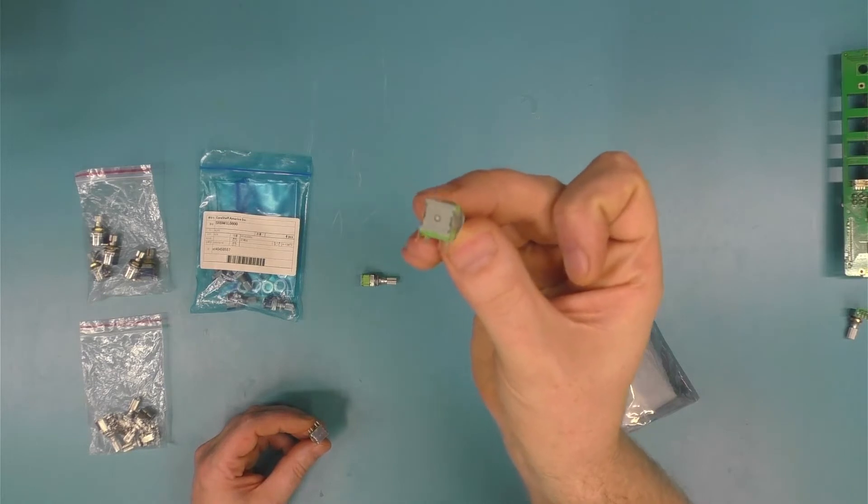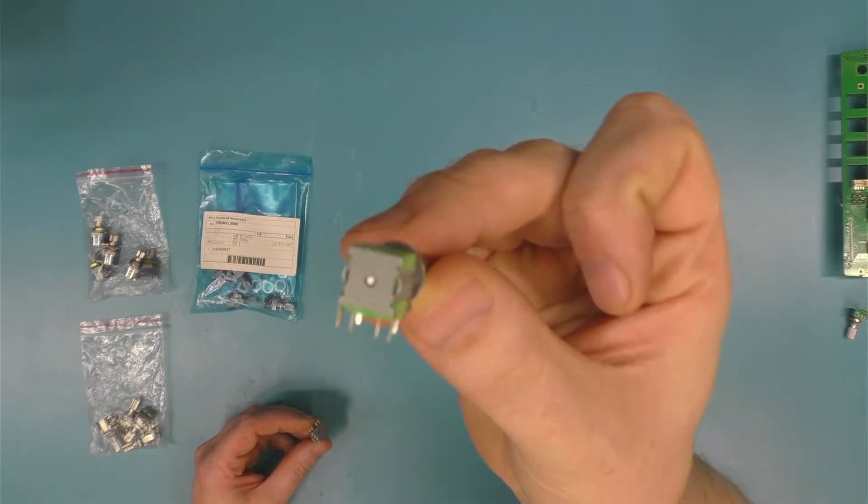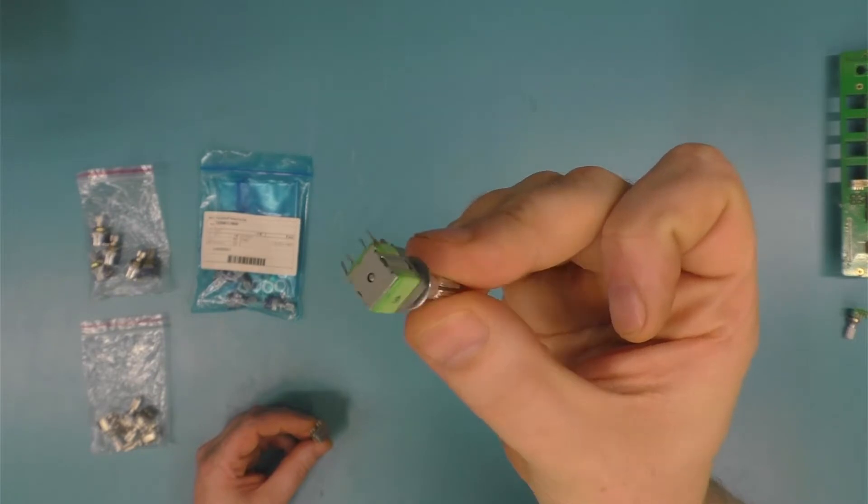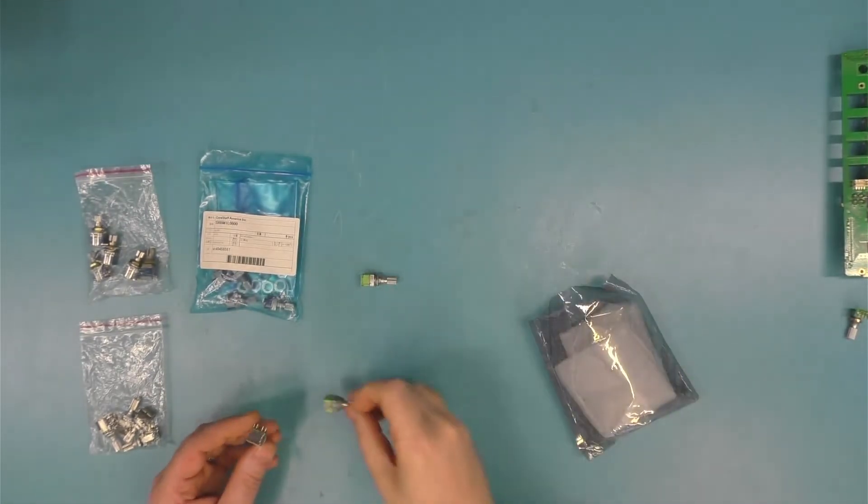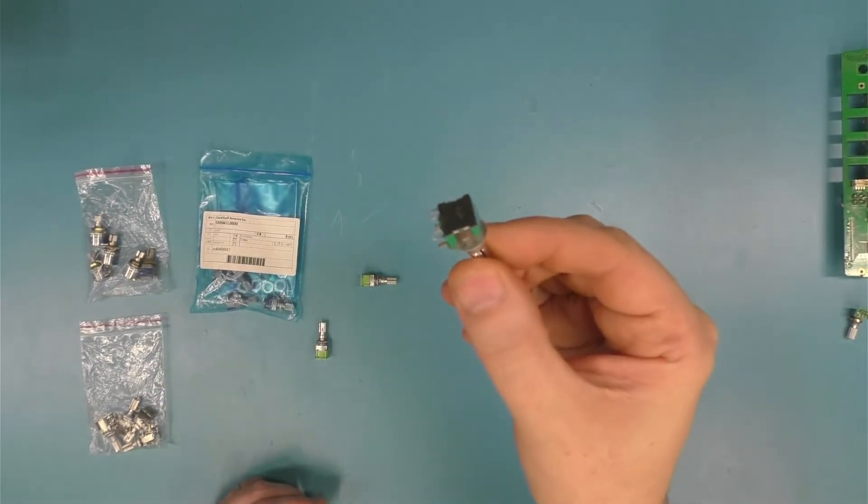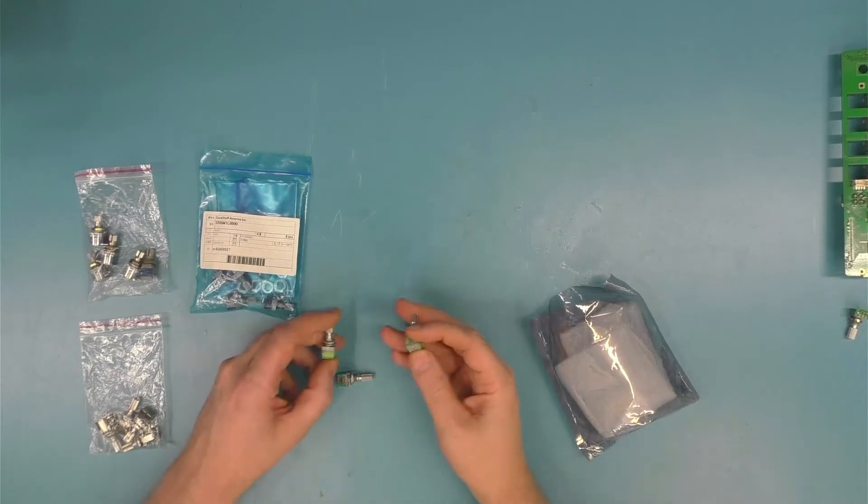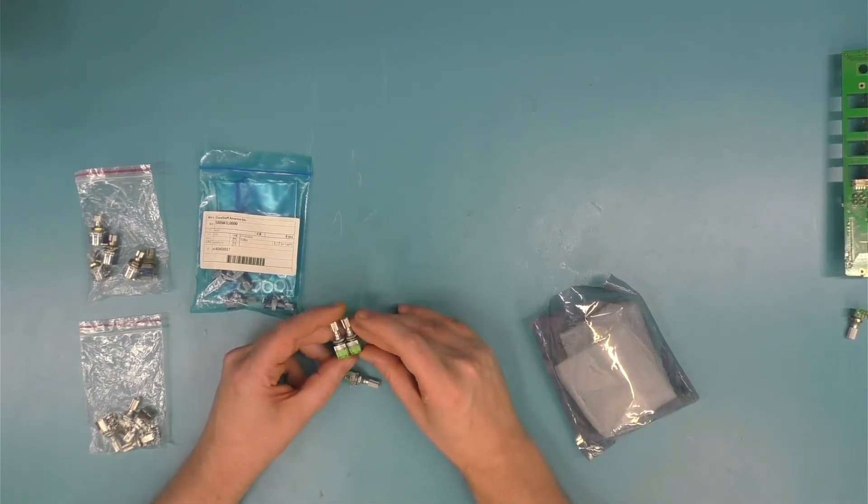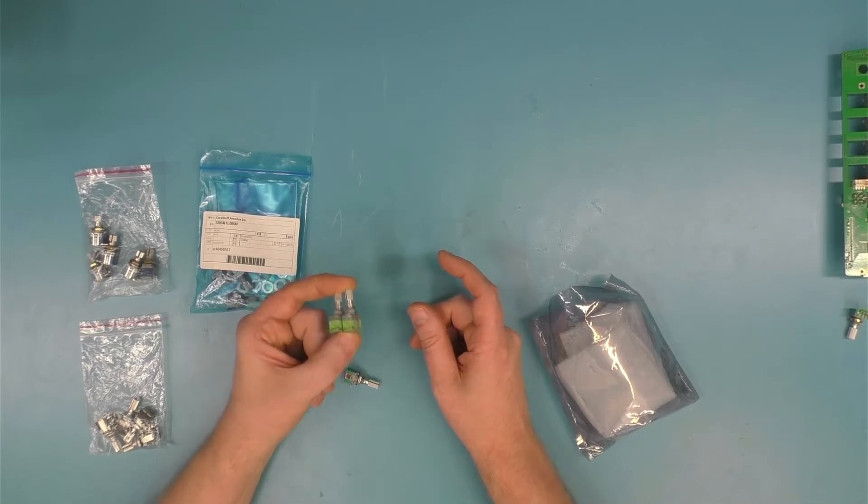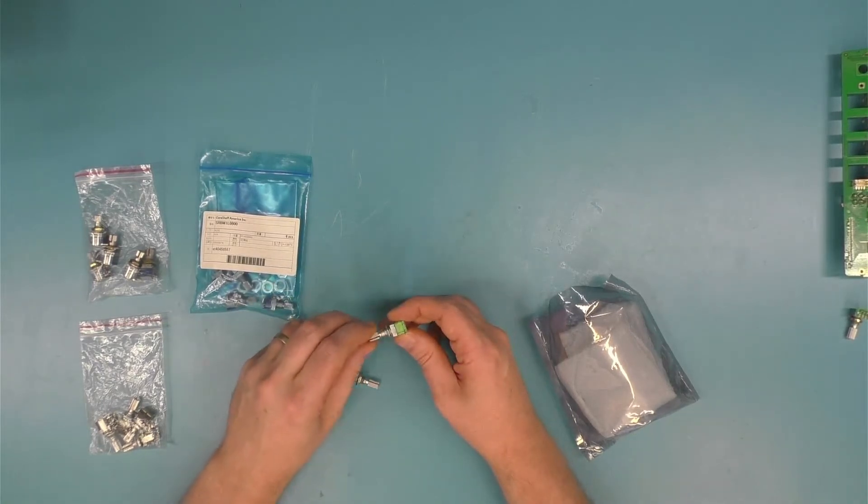You can see that they're a slightly different style control. I don't know that the camera is really going to focus on this very much. But these are the Alphas. A little bit different of a control than the LJV control. They are physically and electrically compatible. And they are hard to get. Hard.